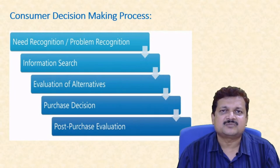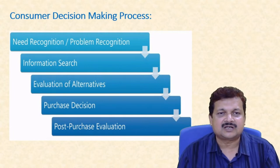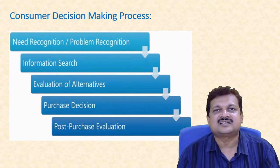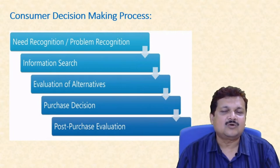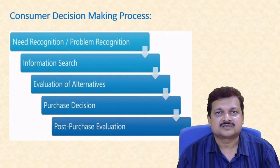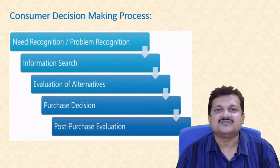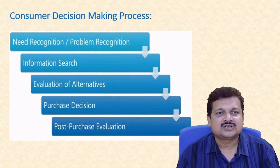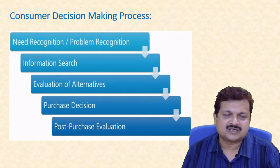Now, why is it essential to know the consumer decision-making process? As a marketer, we need to understand the different stages a consumer goes through when taking decisions. There are five stages: first, need recognition and problem recognition; second, information search; third, evaluation of alternatives; fourth, purchase decision; and fifth, post-purchase decision.